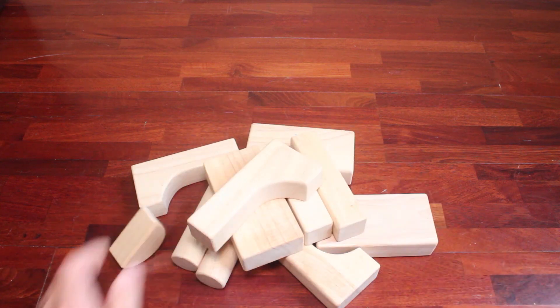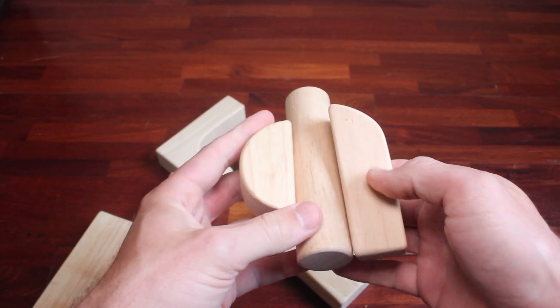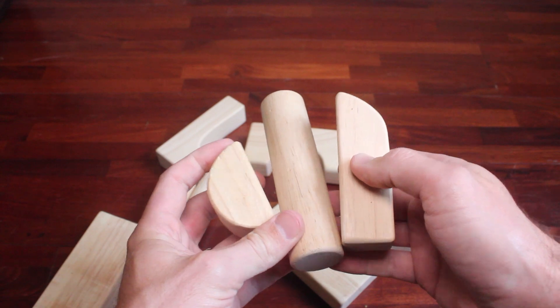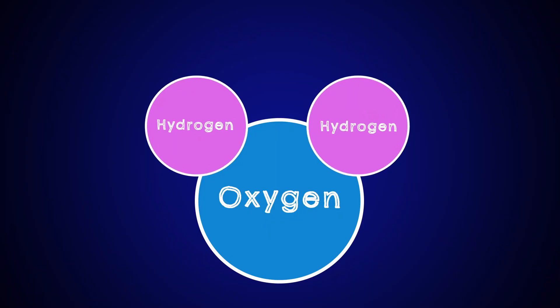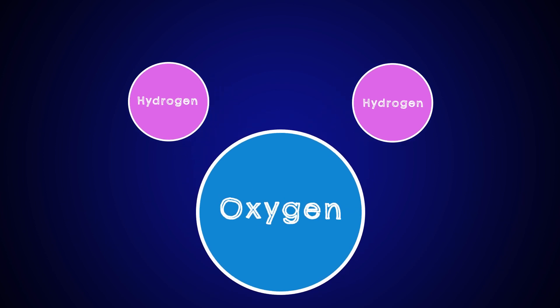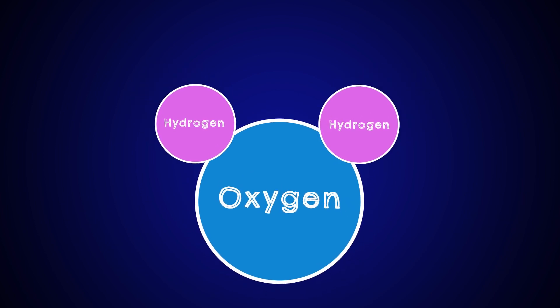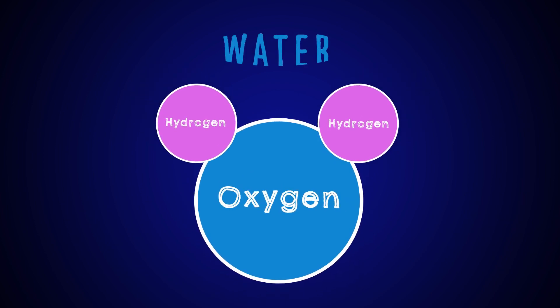Think of atoms like the building blocks of matter. Each block by itself is just a block — not all of them look the same — but we can put them together to make something else like a tower, a car, or a bridge. Just like when we put atoms together we can make something else called molecules. Back to our water example: each water molecule has two hydrogen atoms and one oxygen atom. By themselves they're just elements, but put together they bond to make water.